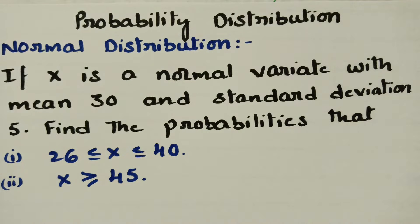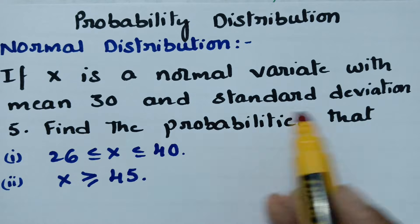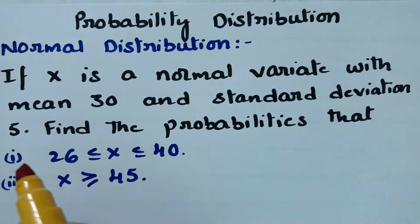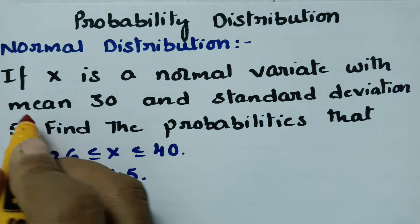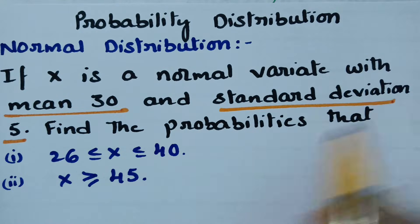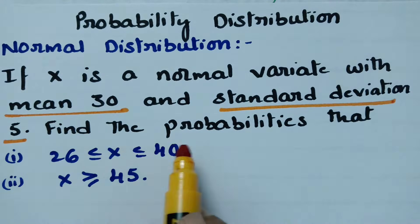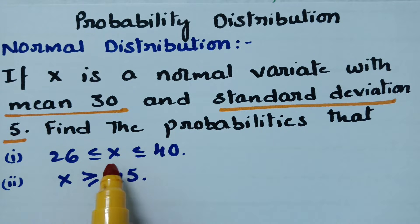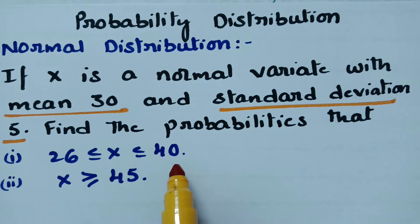This video is on normal distribution. Here is the problem: if x is a normal variate with mean 30 and standard deviation 5, find the probabilities that 26 ≤ x ≤ 40 and x ≥ 45.